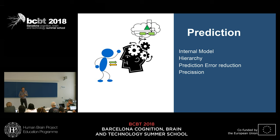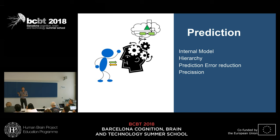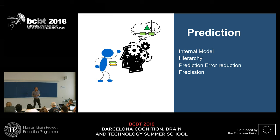There's some debate about how much the predictive processing framework has revolutionized existing neuroscience, or whether it's just finding new terminology. But finding a parsimonious explanation might already be a very important goal to find the right kind of paradigms to investigate.